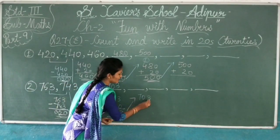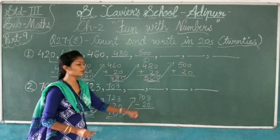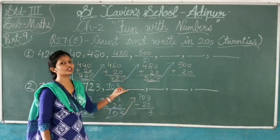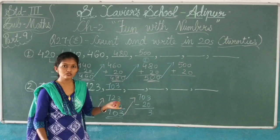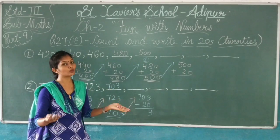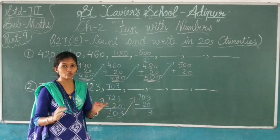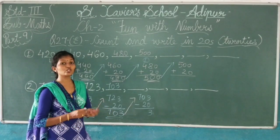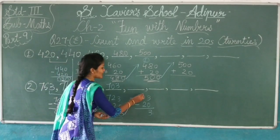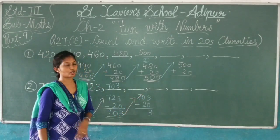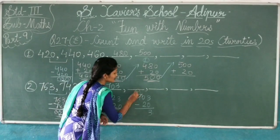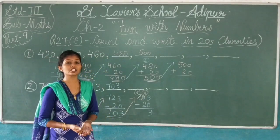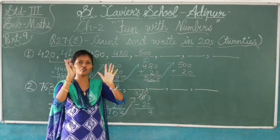Now again I will take this 703 up. 703 minus 20. Now 3 minus 0 is 3. Now see, 0 is there. 0 minus any number we cannot do, because 0 has no value and we cannot minus from it. If we have to minus any number, we have to use borrowing.